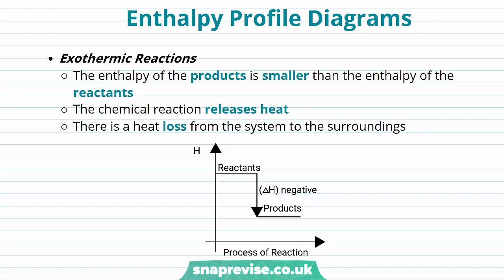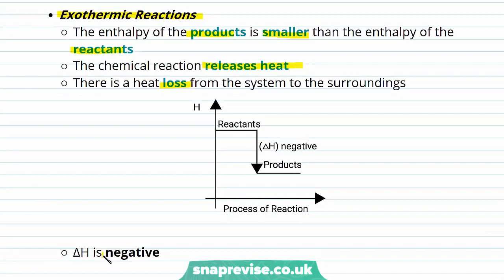In exothermic reactions, the enthalpy of the product is smaller than the enthalpy of the reactants. As you can see from our diagram, the enthalpy of the product is lower than that of the reactants. The chemical reaction releases heat, and there is a heat loss from the system to the surroundings. As a result, delta H — the enthalpy change — is negative.